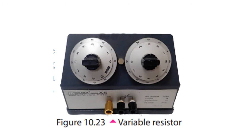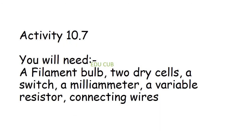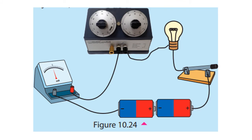Next are variable resistors. Fixed resistors have a definite resistance, but there are resistors made to vary the current flowing through a circuit — these are called variable resistors. For the activity using a variable resistor, you will need a filament bulb, two dry cells, a switch, a milliammeter, a variable resistor, and connecting wire. Connect the bulb, switch, dry cells, milliammeter, and the variable resistor. Turn the adjustable key of the variable resistor to maximize the value, close the switch, and let the current flow through the circuit. Observe the brightness of the bulb and record the milliammeter reading.